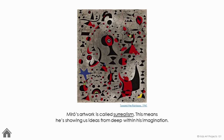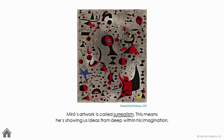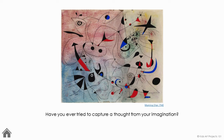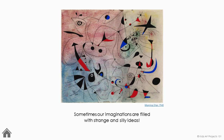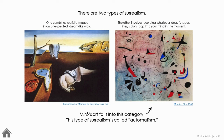Miró's artwork is called Surrealism. This means he's showing us ideas from deep within his imagination. Have you ever tried to capture a thought from your imagination? Sometimes our imaginations are filled with strange and silly ideas. There are two types of surrealism. One combines realistic images in an unexpected and dreamlike way. The other involves recording whatever ideas, whatever shapes, lines, or colors pop into your mind in the moment. Miró's art falls into this category. This type of surrealism is called automatism.